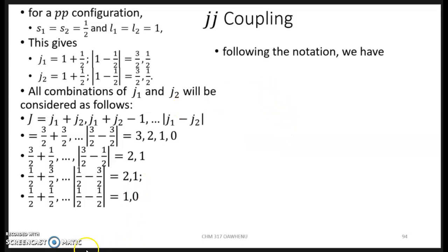So the notation that we use here for the JJ coupling is: when both values are 3 halves and 3 halves, these are the possible values of J: 3, 2, 1, 0 that we obtain here. When we have 3 halves and 1 half, we have 2, 1. When we have 1 half and 1 half, we have 1, 0. And then 1 half and 3 halves gives 2, 1.